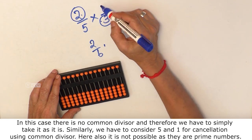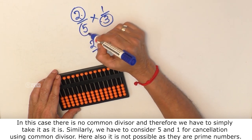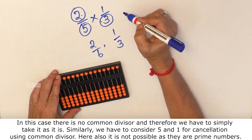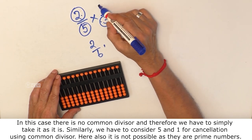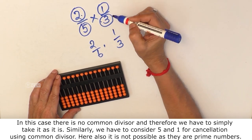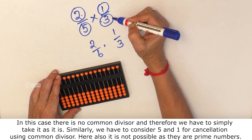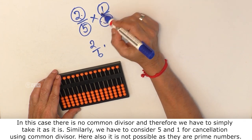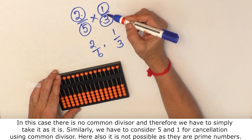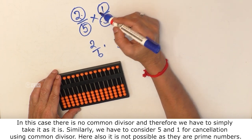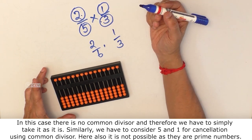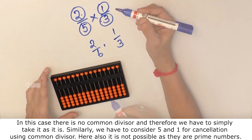Similarly, we have to consider 5, which is the denominator of the first fraction and 1, which is the numerator of the second fraction, to find out whether cancellation can be done using a common divisor. Here also, it is not possible as they are prime numbers.